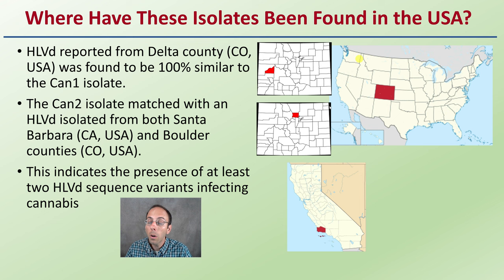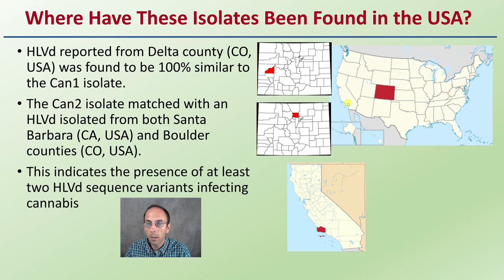So where have these isolates actually been found? CAN1 was found in Delta County, Colorado, showing 100% similarity to the CAN1 isolate. CAN2 matched with isolates in Santa Barbara, California, as well as Boulder County, Colorado. This indicates the presence of at least two Hop Latent Viroid sequence variants infecting cannabis across these regions.